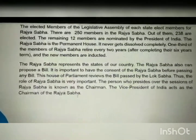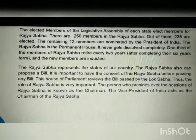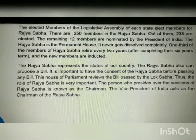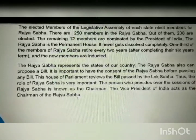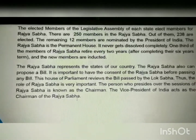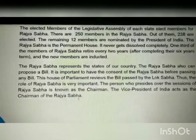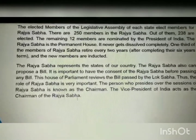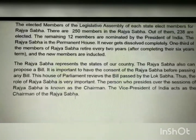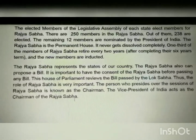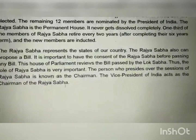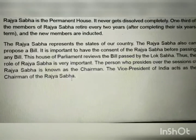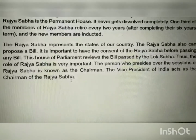The Rajya Sabha can also propose a bill, and it is important to have the consent of the Rajya Sabha before passing any bill. This house of parliament reviews the bill passed by the Lok Sabha — so when any bill is introduced, it is first passed by Lok Sabha and then Rajya Sabha takes a view on it, making the role of Rajya Sabha very important. The person who presides over the sessions of Rajya Sabha is known as the Chairman, and the Vice President of India acts as the Chairman of the Rajya Sabha.